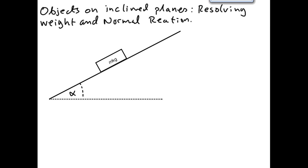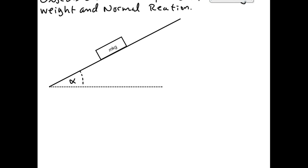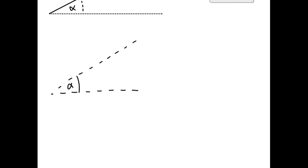We've got a block on a plane with weight acting on it, definitely. Since it's not falling through the plane, there must be a normal reaction force acting between the plane and the block. My first move would always be to go immediately to a free-body diagram, or force diagram depending on what your teacher calls it. I'll draw a dashed line to represent the plane. We're treating our body as a particle at M1 level — we don't need to worry about centres of mass until M2 and M3.